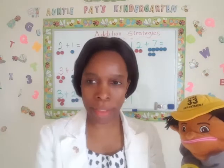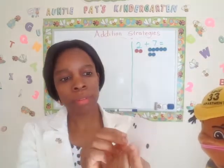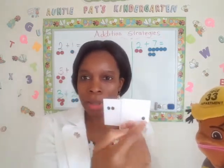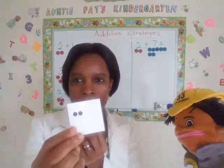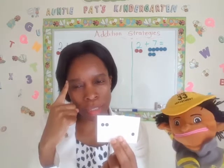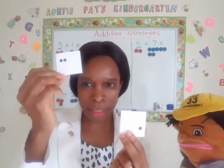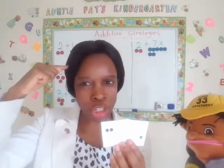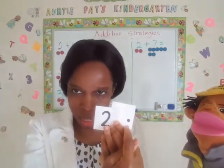Let's try another set of numbers. How many dots in all? One, two, three — three dots total. One card has two dots, the other has one dot. Can we use the counting on strategy? Which card has more dots? This card — and how many dots is that? Two. So we're going to put that two in our heads and count on from two: two, three. All together we have three dots.